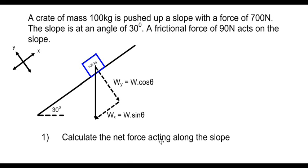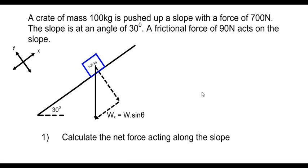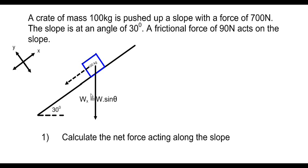Because we're only looking at the forces acting along the slope, we won't worry about the y-component of weight. So we have the x-component of weight, wx = w·sinθ, which is one of the forces that will pull the object down the slope.